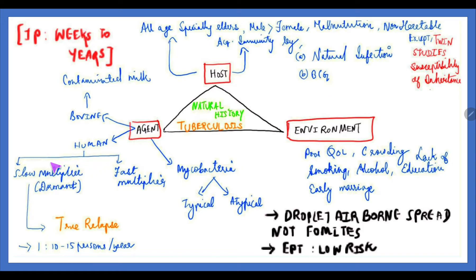Next is humans. One important thing is that in humans there are slow multipliers and fast multipliers. True relapse occurs because some bacteria act as dormant bacilli and at a later stage can initiate infection. One person can infect under 15% per year — that is the annual infection rate. Incubation period varies from weeks to years because there are both dormant and fast-multiplying bacilli.